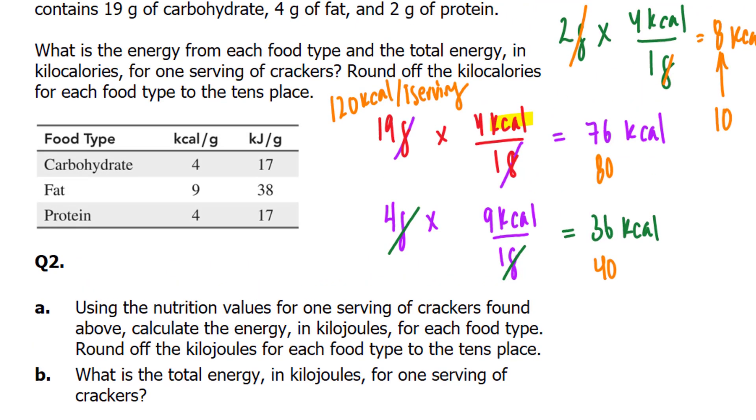So essentially, they want us to do the same thing as before, except use these as our conversion ratios. I'm not going to waste your time doing that. Just remember that this 4 kilocalories per 1 gram would be replaced with 17 per gram. This would be replaced with 38 kilojoules per gram. And similarly, the same treatment here for proteins.